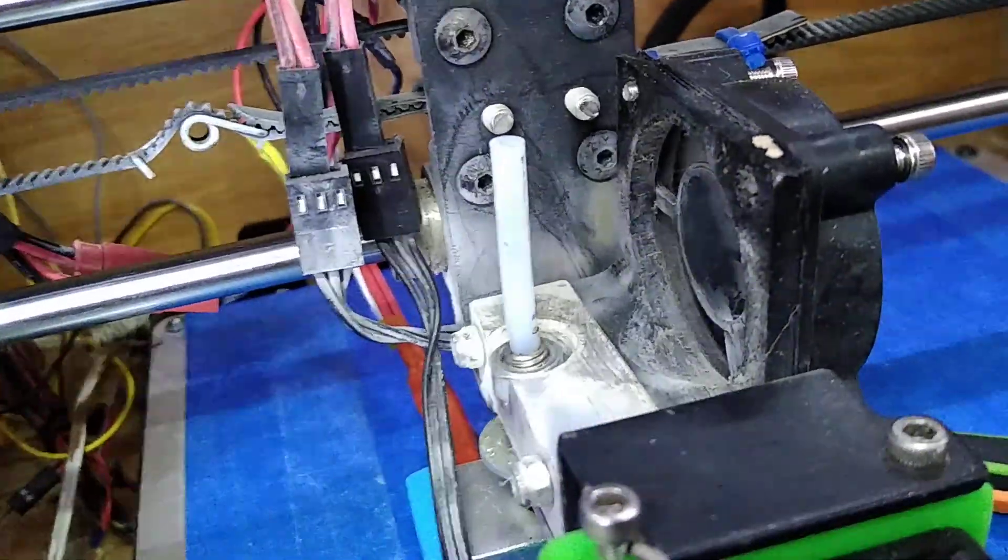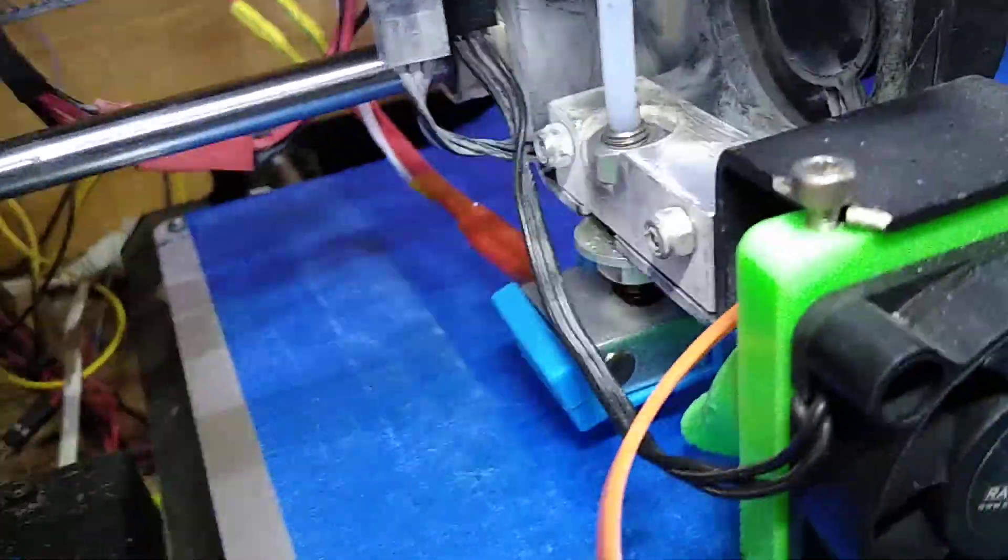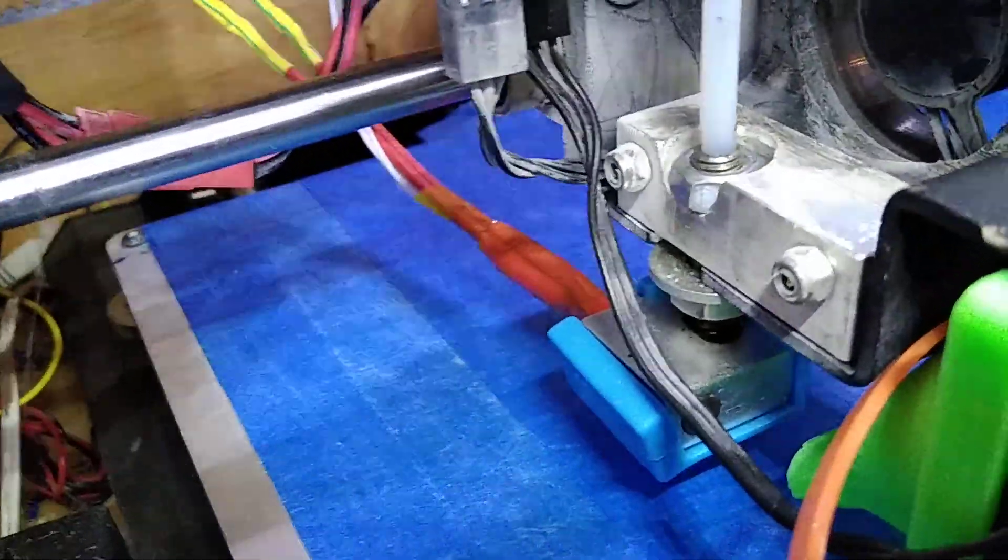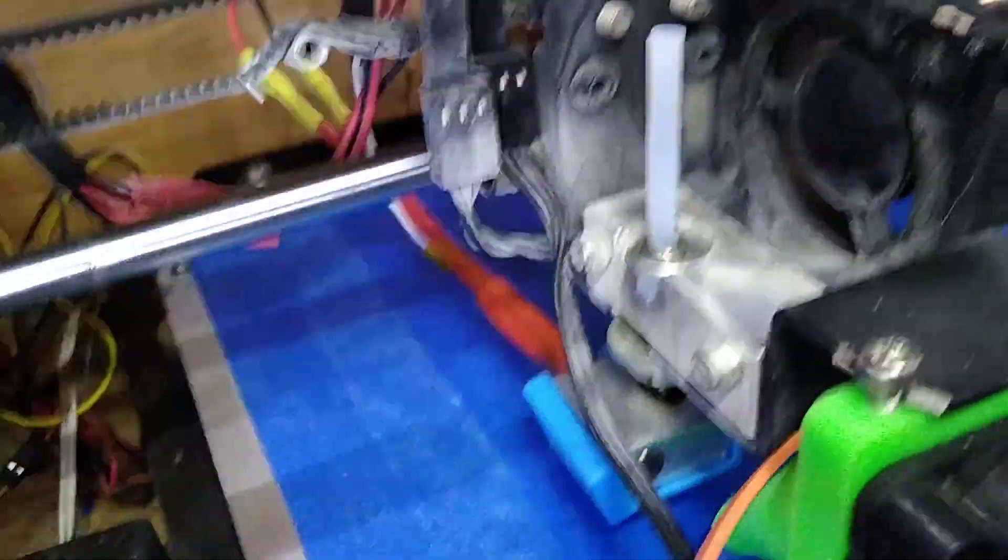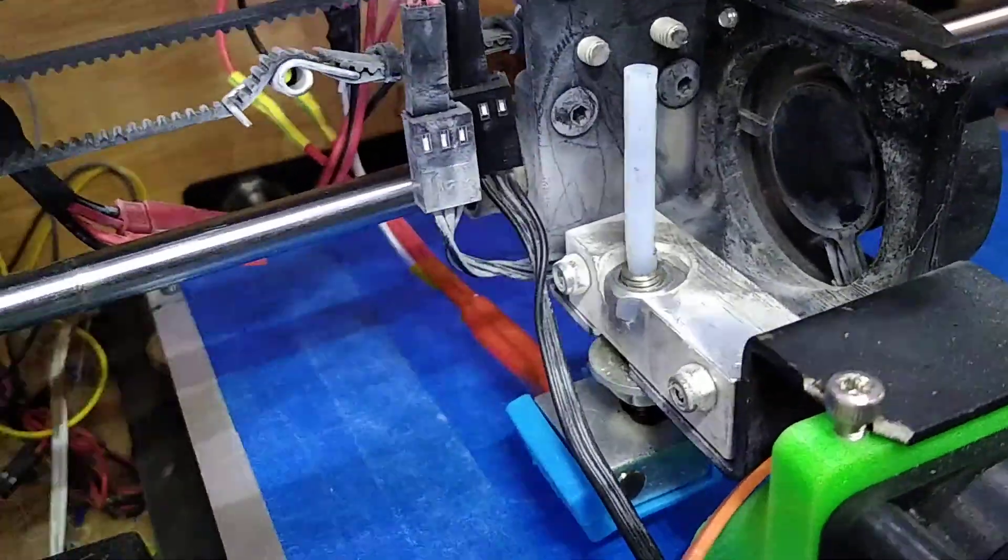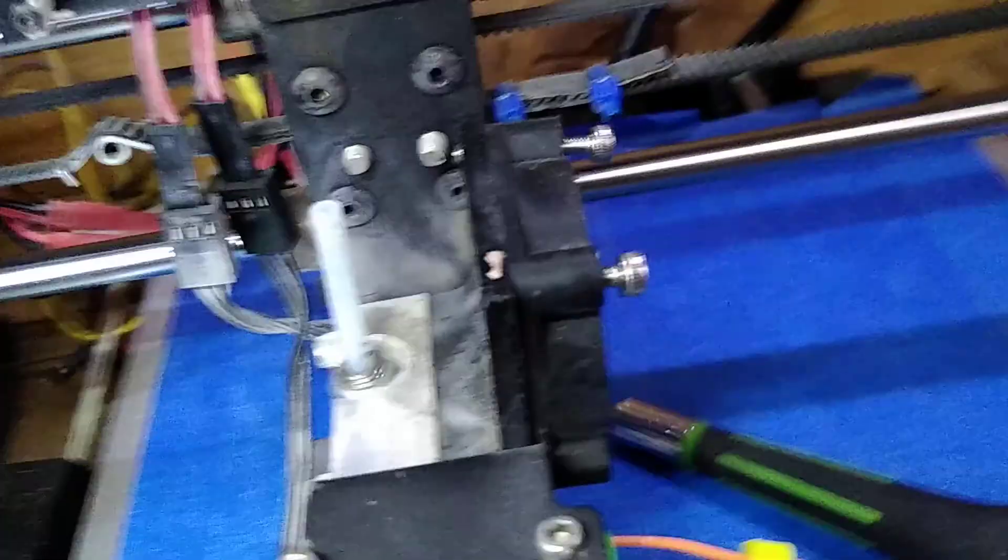By the way, this is your stock extruder, no modifications except for—you have to take the fan that was on this side and then flip it over to this side here with all the parts necessary.